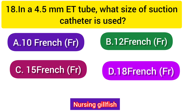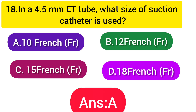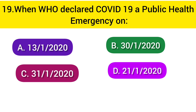Next question: For a 4.5mm endotracheal tube, what size of suction catheter is used? Option A: 10 French, Option B: 12 French, Option C: 15 French, Option D: 18 French. The correct size for a 4.5mm ET tube is Option A - 10 French.